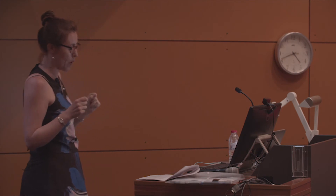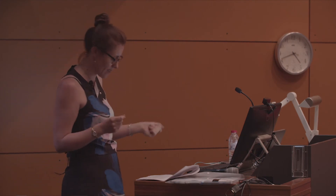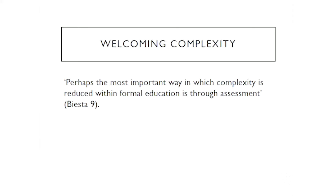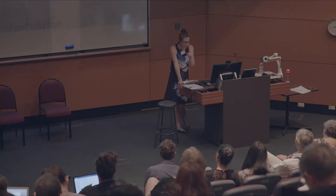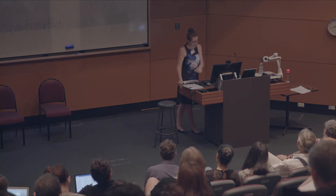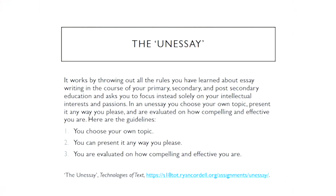One way that we can attempt to shift the amount of complexity in our systems is through assessment. Biesta argues that perhaps the most important way in which complexity is reduced within formal education is through assessment. The reason for this is pretty clear: when it comes to learning outcomes and results, clarity and certainty are kind of desirable outcomes. But from a complexivist perspective, you need to get comfortable with ambiguity. So within the English department at my university, James Cook, we're about to pilot the implementation of an adapted version of the UNSA, which some of you I'm sure have heard of. Not our original concept — adapted here from Ryan Cordell's UNSA model. This is an unstructured, creative, open assessment with very few rules, as you can see on the screen.